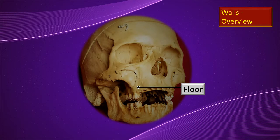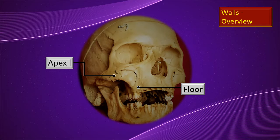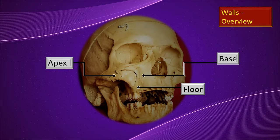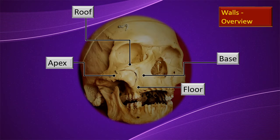Now an overview of the walls with clear labels. The floor is at the bottom. The apex is lateral, at the zygomatic process of the maxilla, and more often projects into the zygomatic bone. The base is what was shown in the previous slide — viewing from that angle you see the base from the interior of the maxillary cavity. The roof is a plate of bone, the orbital plate of the maxilla, which separates the maxillary sinus from the orbital cavity.